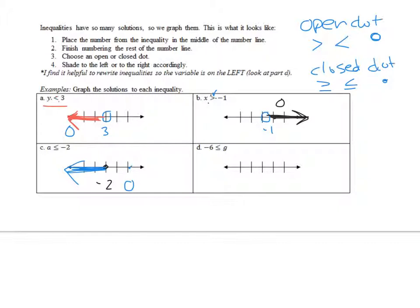Example D is a tricky one. Don't assume that because you see a less than symbol you shade to the left — that's not correct. We put negative 6 with a closed dot because it's less than or equal to, but ask: which is greater, G or negative 6? G is bigger, so numbers greater than negative 6 go to the right. You can rewrite it as G is greater than or equal to negative 6 — when you switch the variable sides, you switch the sign too.